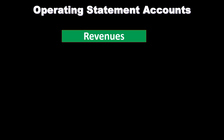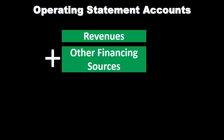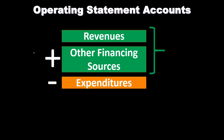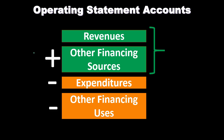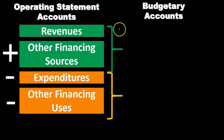Operating statement accounts are equivalent to income statement accounts for a for-profit organization. They include revenues and other financing sources, which are similar to revenues and increase what would be net income. Then we have expenditures — similar to expenses under the modified accrual basis — and other financing uses, which decrease net income but are not the same as expenditures. These will become clearer as we see transactions to record them.